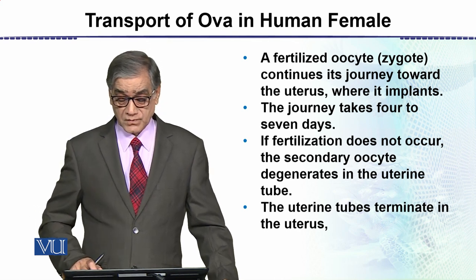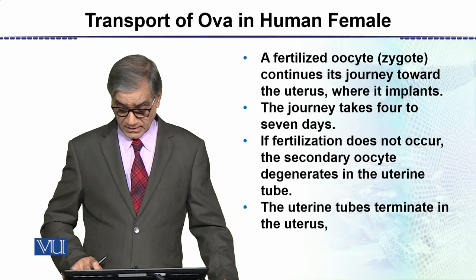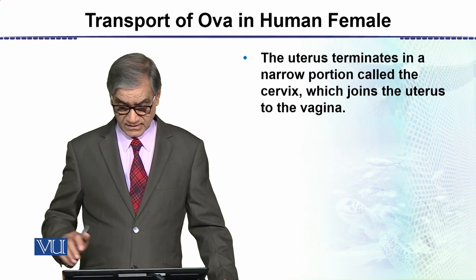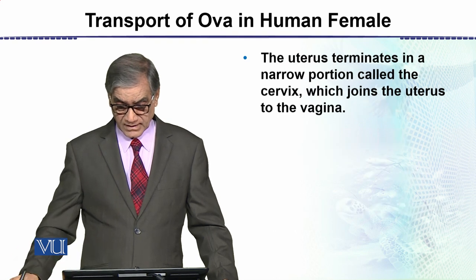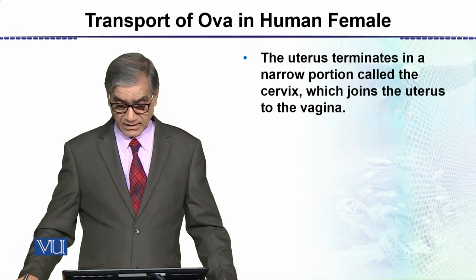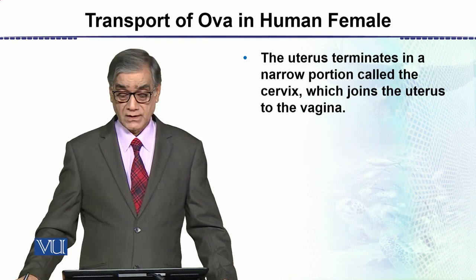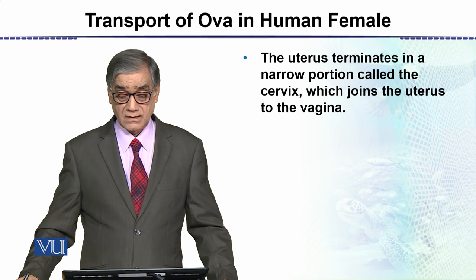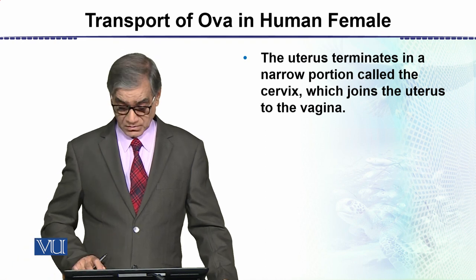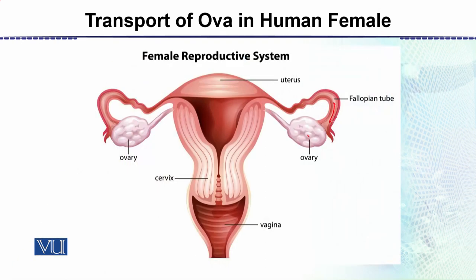The uterine tubes terminate in the uterus. The uterus terminates in a narrow portion called the cervix, which joins the uterus to the vagina. یہ جو بھی ہم نے discuss کیا ہے اسے دوبارہ اس diagram میں بھی دیکھ سکتے ہیں۔